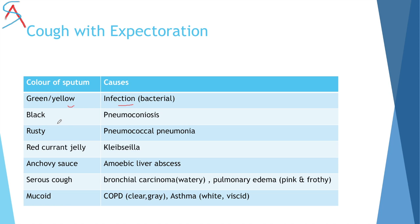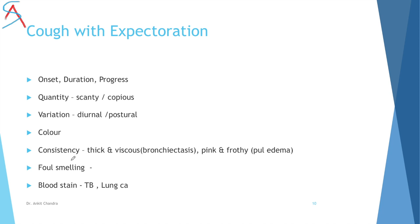Ask about sputum color: green or yellow indicates bacterial infection; black in pneumoconiosis; rusty in pneumococcal pneumonia; red currant jelly in Klebsiella; anchovy sauce-colored in amoebic liver abscess; watery/serous in bronchial carcinoma; pink and frothy in pulmonary edema; mucoid (clear and gray) in COPD; white and viscid in asthma. Also ask about consistency — thick and viscous in bronchitis, spring-like and frothy in pulmonary edema — whether foul-smelling, purulent, or blood-stained.